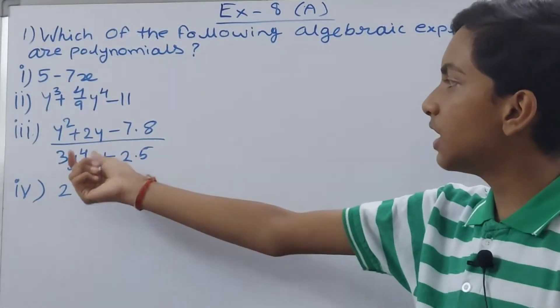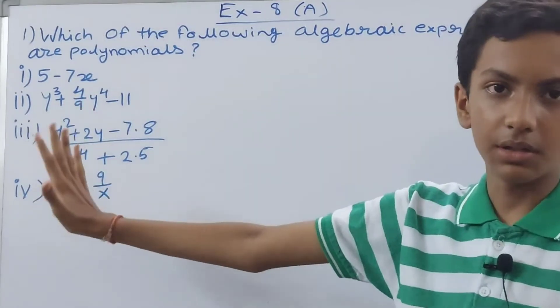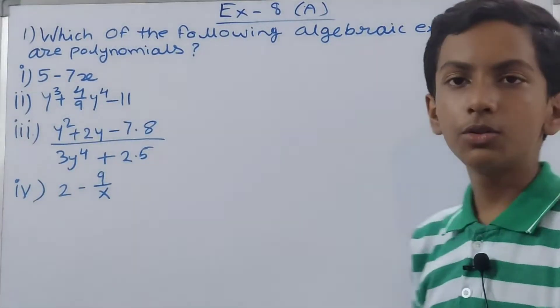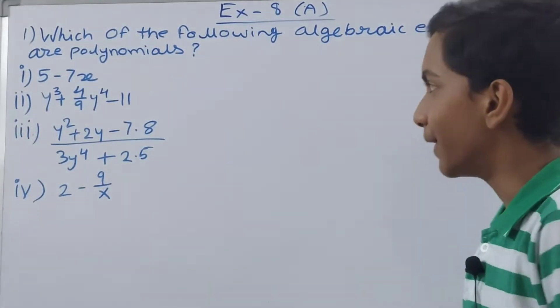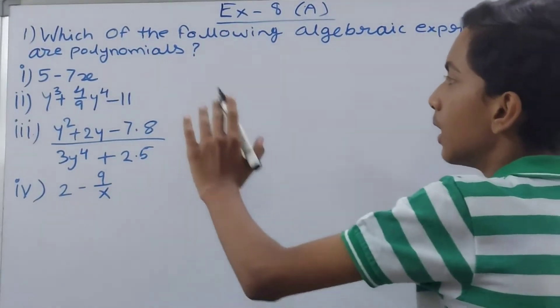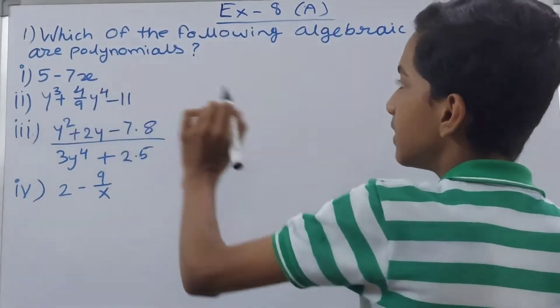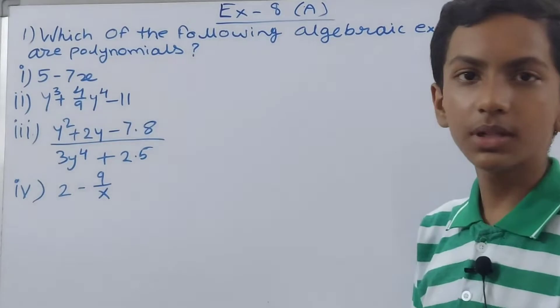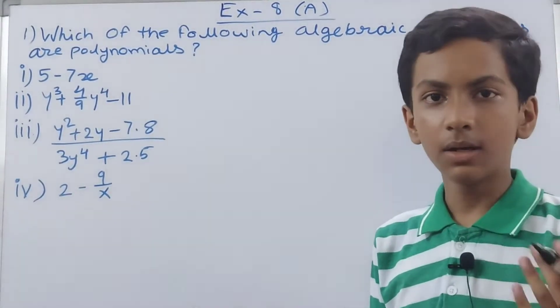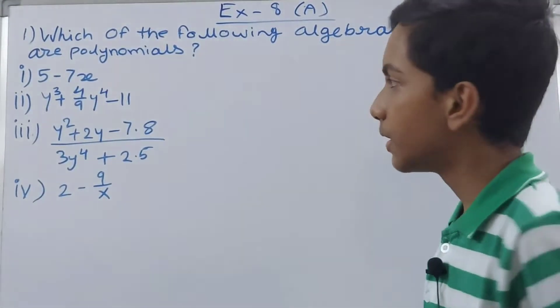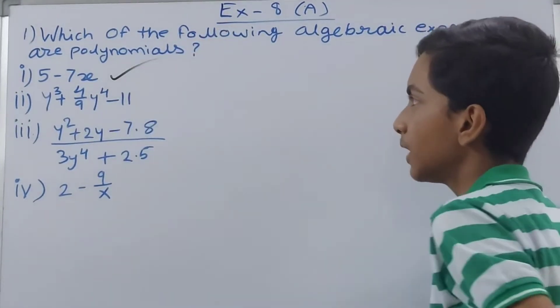It should not have a power in the denominator. So let us see, the first one is 5 minus 7x. Clearly it is a polynomial because the variable is not in the place of the denominator. I'm taking the ones which are polynomials.